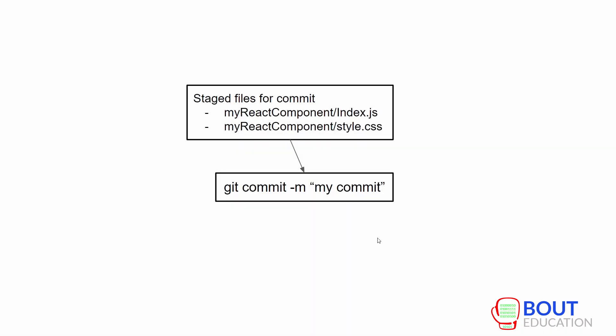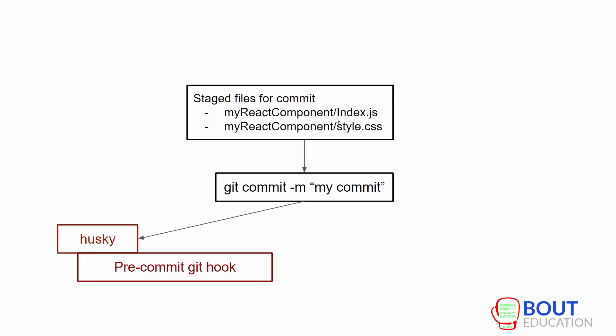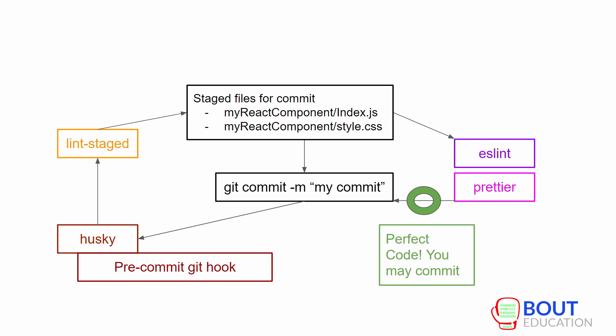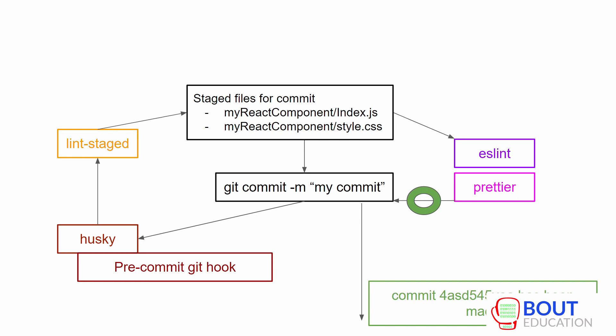So we'll quickly go over what we'll be implementing. We have files that are staged for commit as part of our React component. Husky is going to intercept this commit and pause it for a while. It's going to invoke lint-staged, which is going to collect all the staged files and then run ESLint and Prettier. If there is an error, as Gandalf has said, you will not pass. But if all the tests pass and Prettier formats everything correctly, the commit will happen.